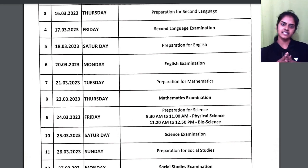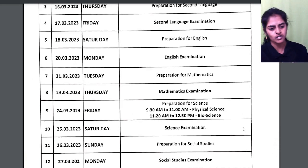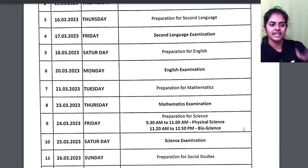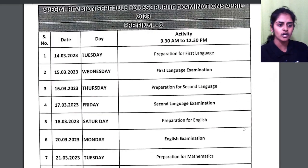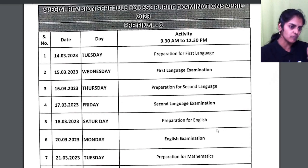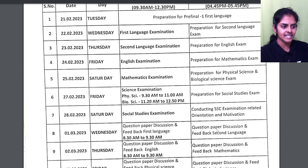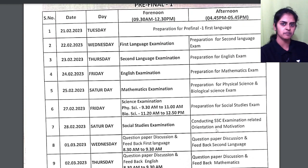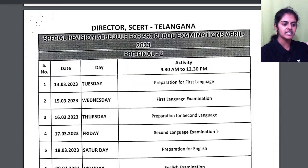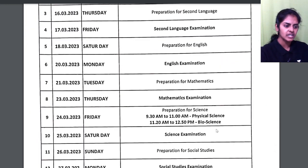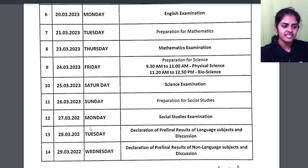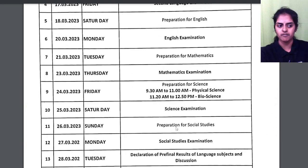26th is Sunday — you will prepare for Social — and then 27th you will write your Social exam. So this is your timetable for pre-final 2. Pre-final 2 is starting from 15th March and pre-final 1 is starting from 21st February. From 21st to 28th February you have pre-final 1, and from 15th to 27th March you have pre-final 2.